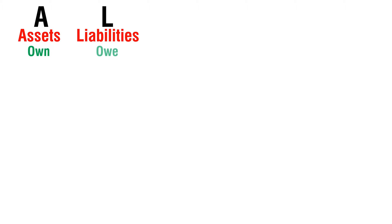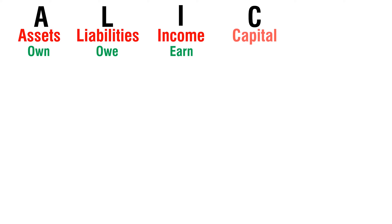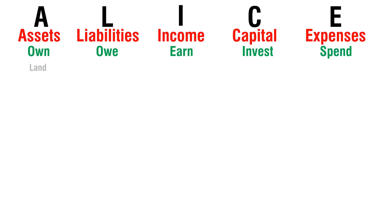Account categories quick reference: Assets — own. Liabilities — owe. Income — earn. Capital — invest. Expenses — spend. Bank loan — owe.